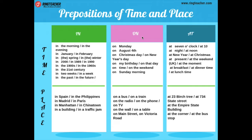Time. We use 'in' for: in the morning, in the evening — en la mañana y en la noche. In January, in February — lo pueden usar con cualquier mes. También con estaciones del año: in the spring, in the winter. Y para años específicos: in 1989, in 1980. También pueden usarlo con el pasado y el futuro: in the past, in the future, in two weeks, in a week.